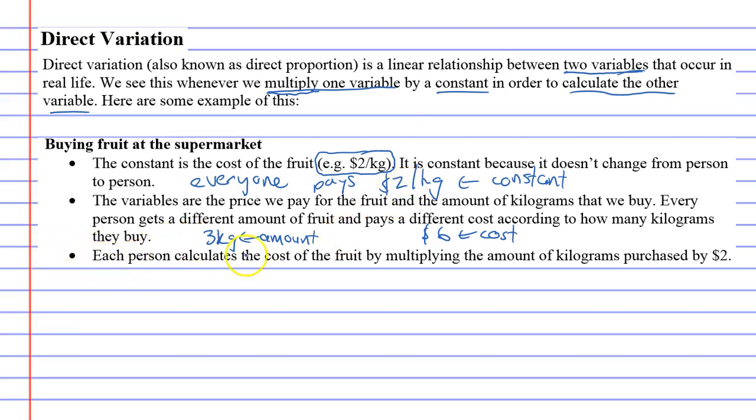Now, last of all, each person calculates the cost of fruit by multiplying the amount of kilograms by $2. So they multiply it by $2, which essentially means to multiply one of the variables, the amount of kilograms, by the constant.